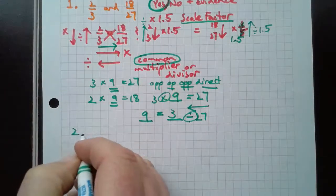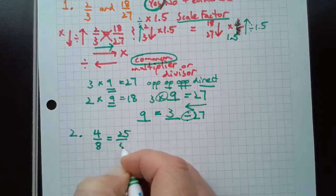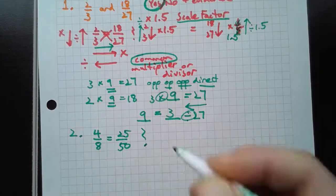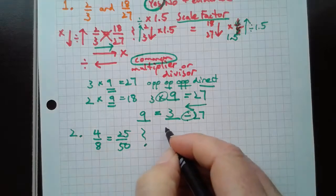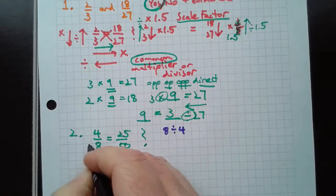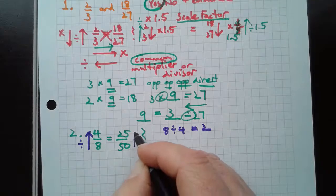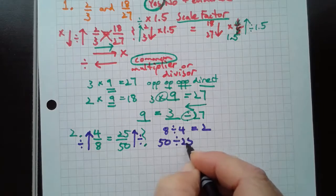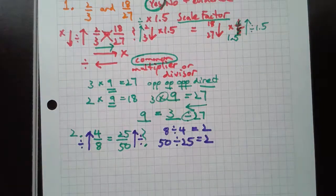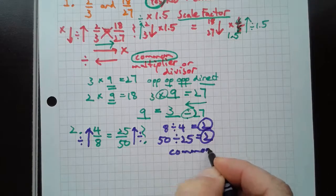On the second one, we have 4/8 and 25/50. Yes or no and provide evidence. If I simply go what's 8 divided by 4, so I'm going this way and I'm dividing, I get 2. So if I do the same thing in the same direction, what's 50 divided by 25? 2. So I have a common divisor.